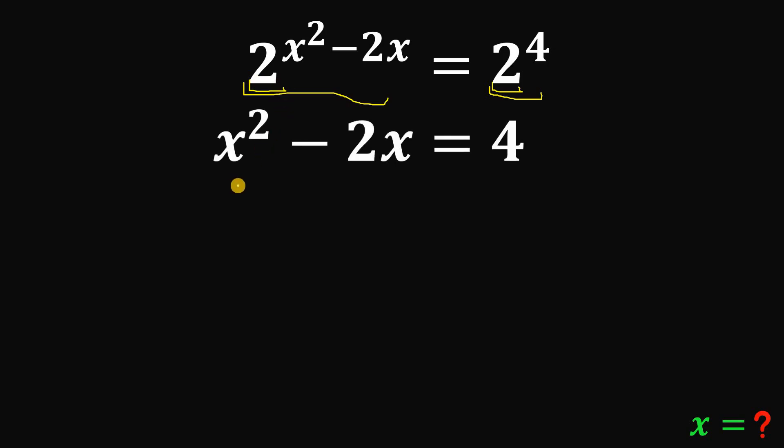Now, we have a quadratic equation, and our goal is to solve for the value of x. Now, to easily solve for the value of x, let's add 1 on both sides. Now, what is the purpose? Because the left hand side, x squared minus 2x plus 1 is a perfect square trinomial. But before that, let's add 1 plus 4, and we'll get 5.